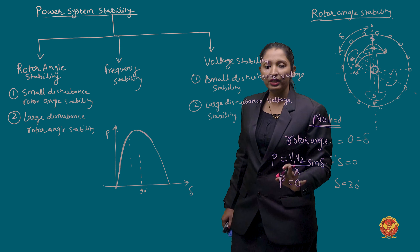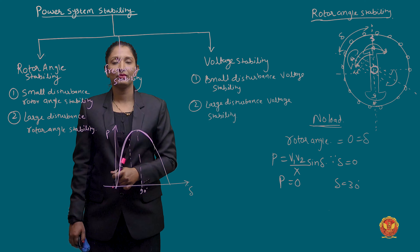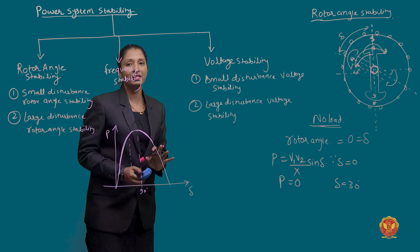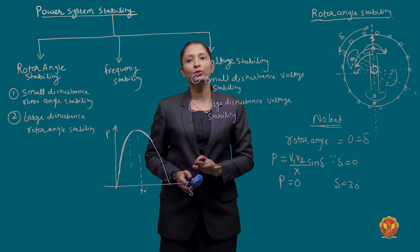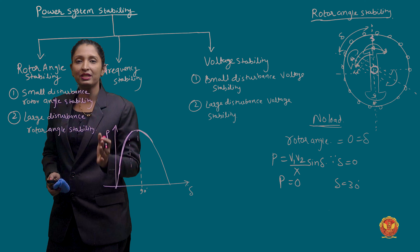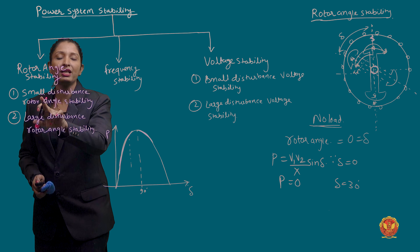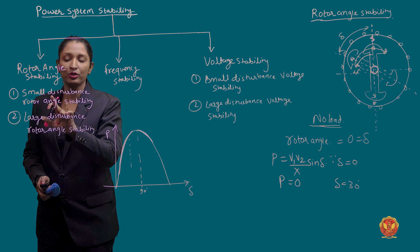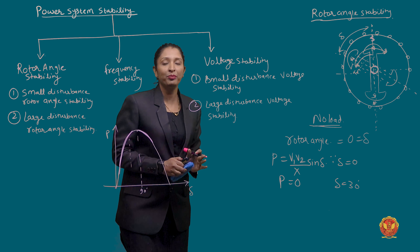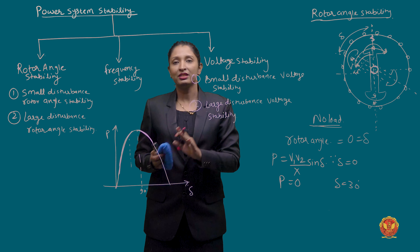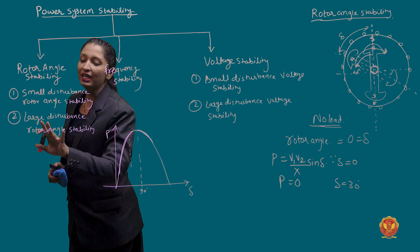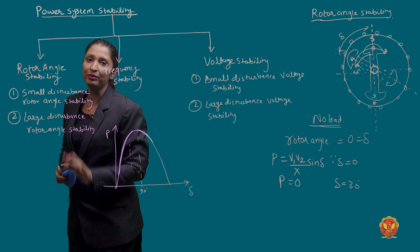This is our rotor angle stability. For small disturbances, the system must sustain them and overcome them and return to a stable state — this is your small disturbance rotor angle stability. After large disturbances, the rotor will settle and the oscillations will be damped out — this is your large disturbance rotor angle stability.